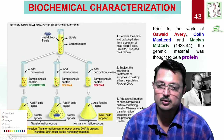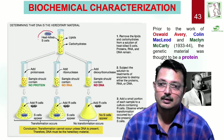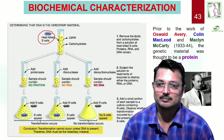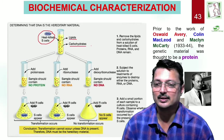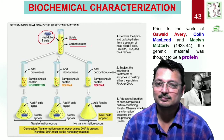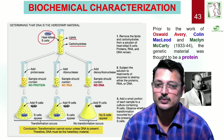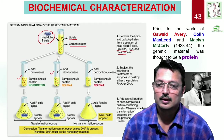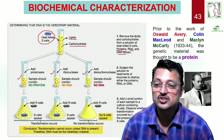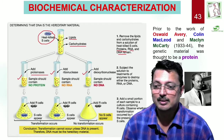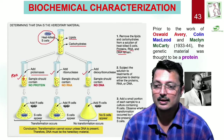From the heat-killed S strain extract, they removed lipids and carbohydrates. What remained was protein, RNA, and DNA. They then treated this with specific enzymes one by one: first, protease was added to digest the protein. What remained was RNA and DNA. In the second tube, RNase was added, leaving protein and DNA. In the third tube, DNase was added, leaving protein and RNA.